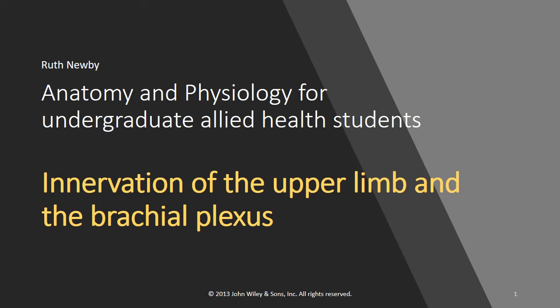As humans, our ability to manipulate our environment comes from our large brain and our useful upper limbs, which have complex musculature combined with extensive innervation. You will need to use your text to carefully revise and refer to the anatomy of the bones and muscles of the upper limb as I'll only provide a brief review here. I won't be discussing the pathophysiology of the innervation of the upper limb as such either, but because I want to put this into context for you, I'll mention some of the occasions when this knowledge is relevant to your clinic.